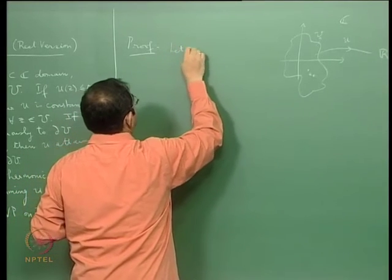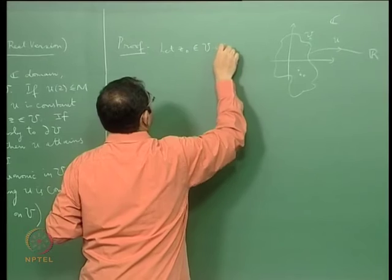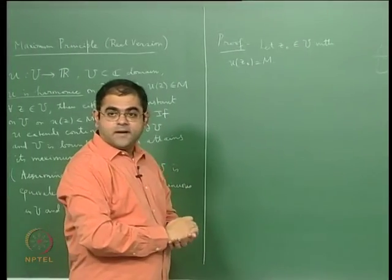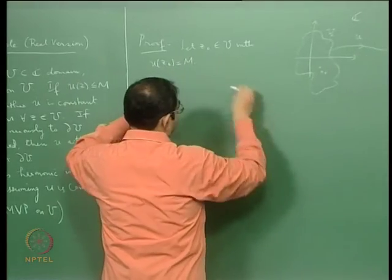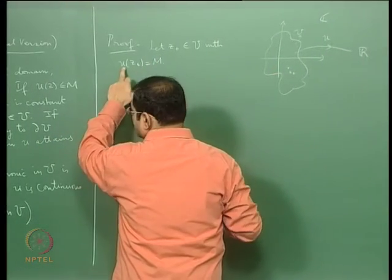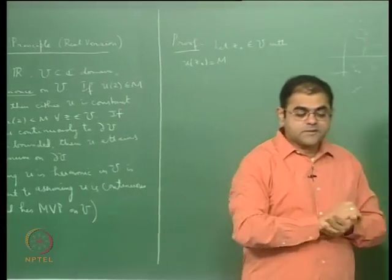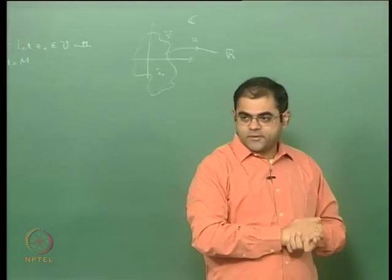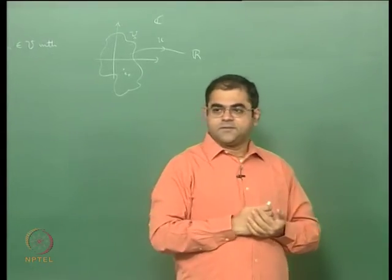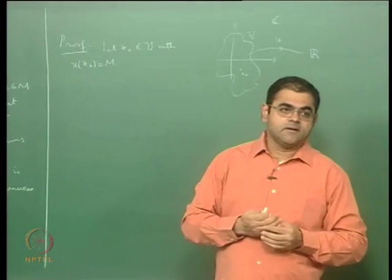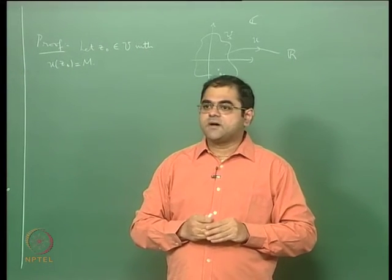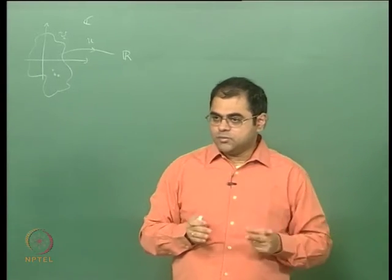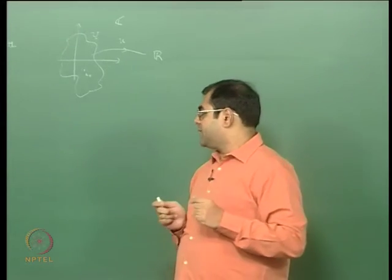Let z0 belong to U with u(z0) equal to M. Now, u is a harmonic function, but more importantly it has the mean value property. A harmonic function is a continuous function which has the mean value property at every point — this is an equivalence. The original definition of harmonic is that the function should satisfy Laplace's equation, have continuous partial derivatives up to order 2, and be continuous.